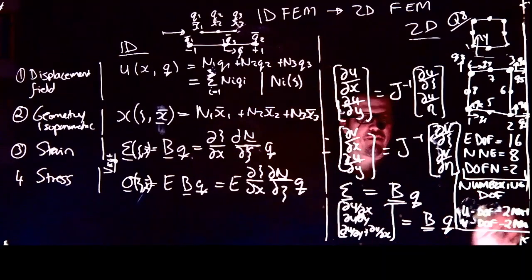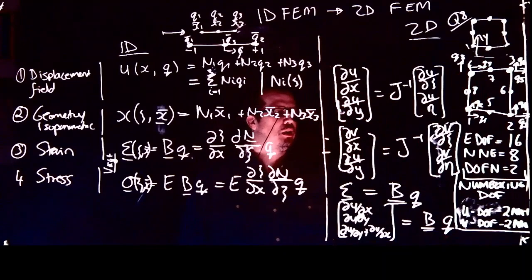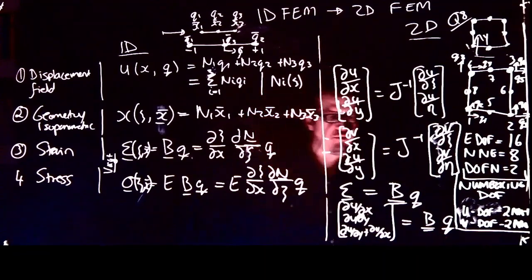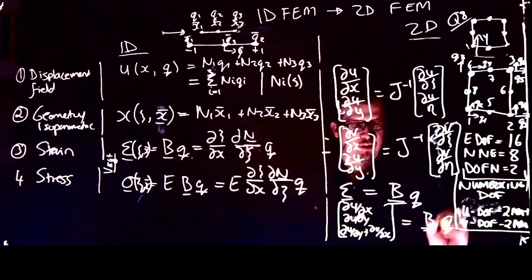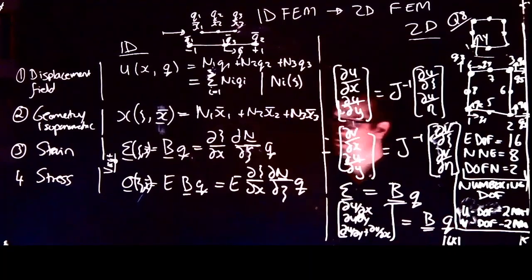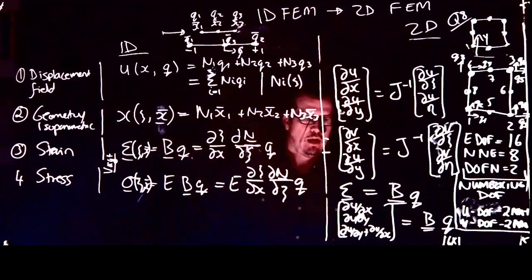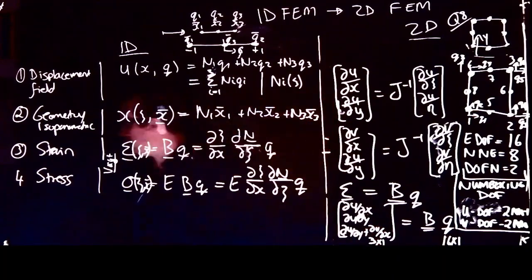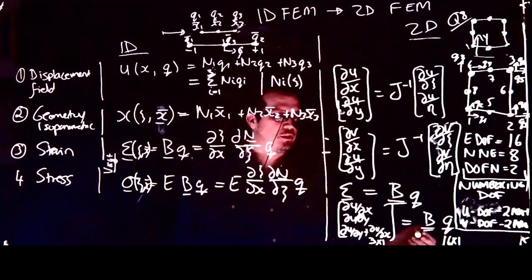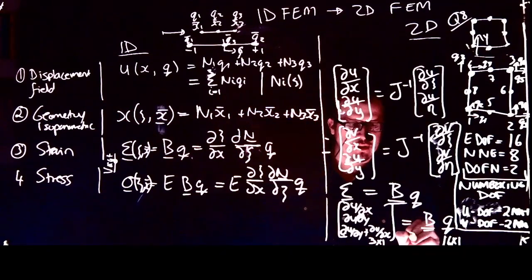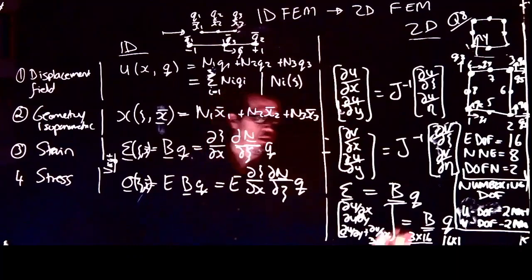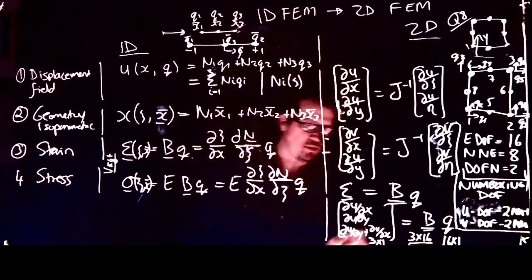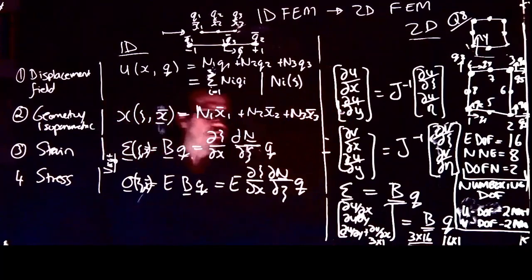We now have this under control. The q vector is a single vector — specifically a 16×1 vector. The strain is a 3×1 vector. So I can already tell you that the B matrix must be a 3×16 matrix — I'll use double bar notation for a matrix and single bar for a vector.